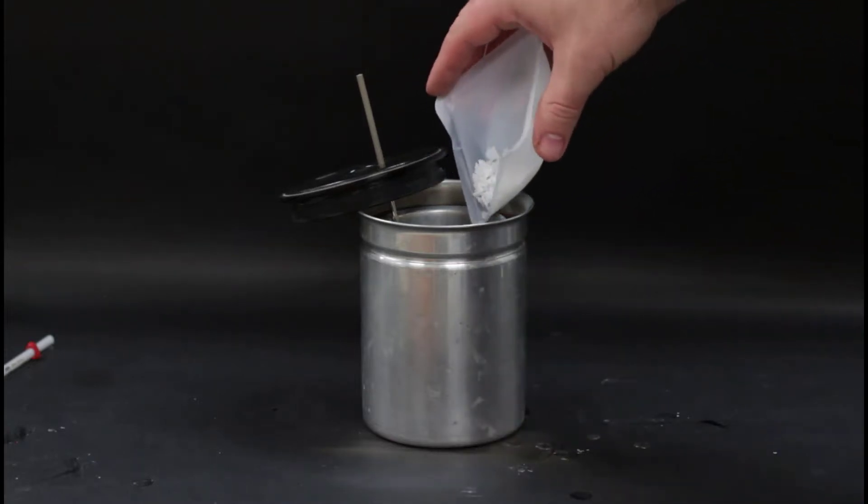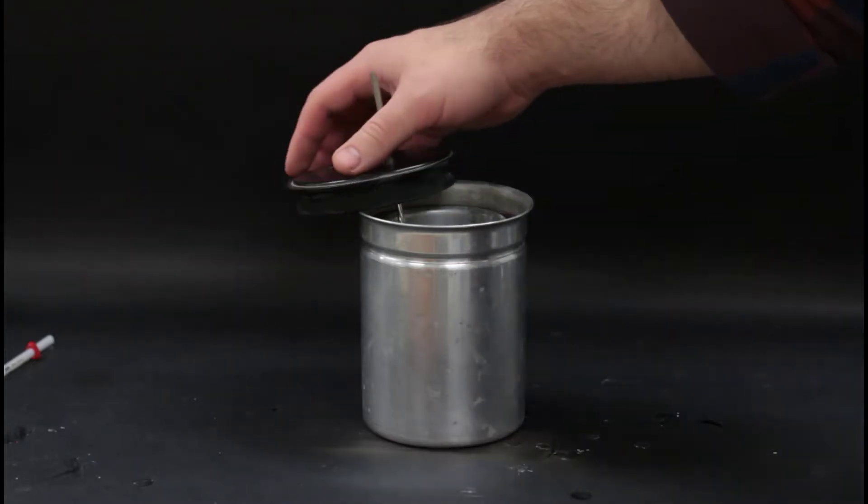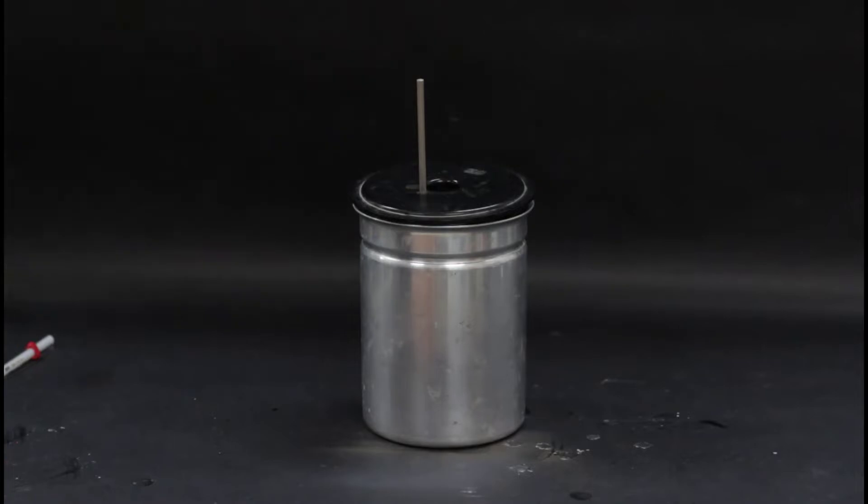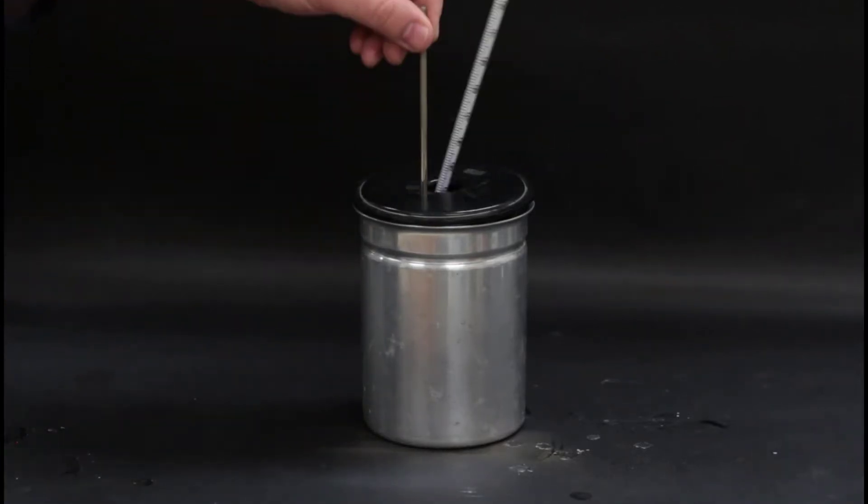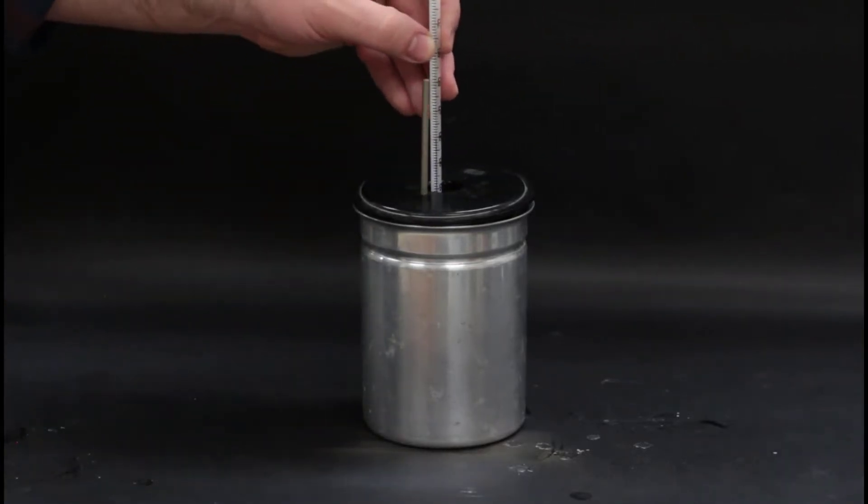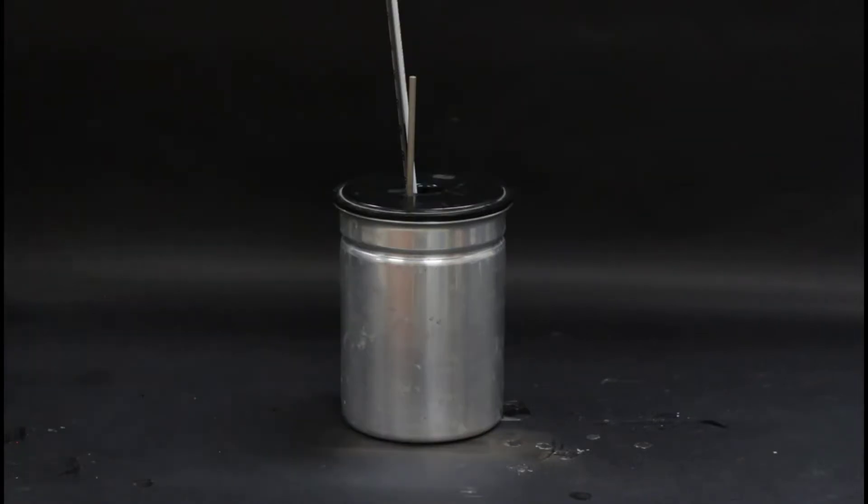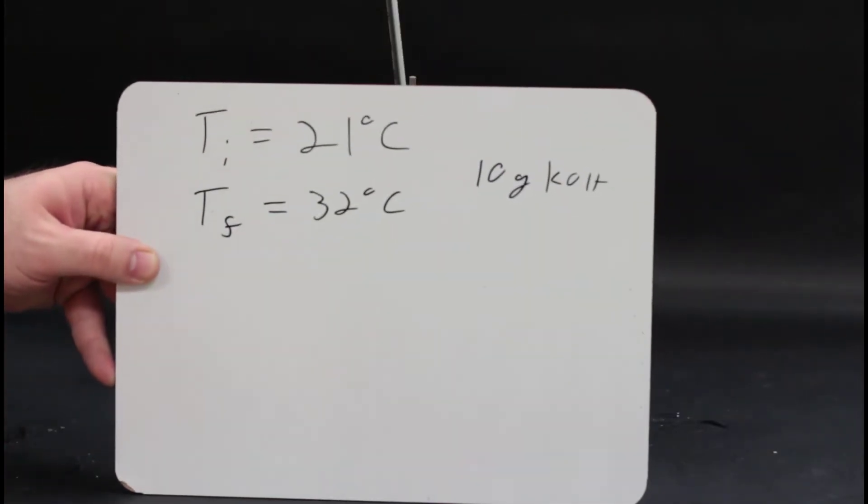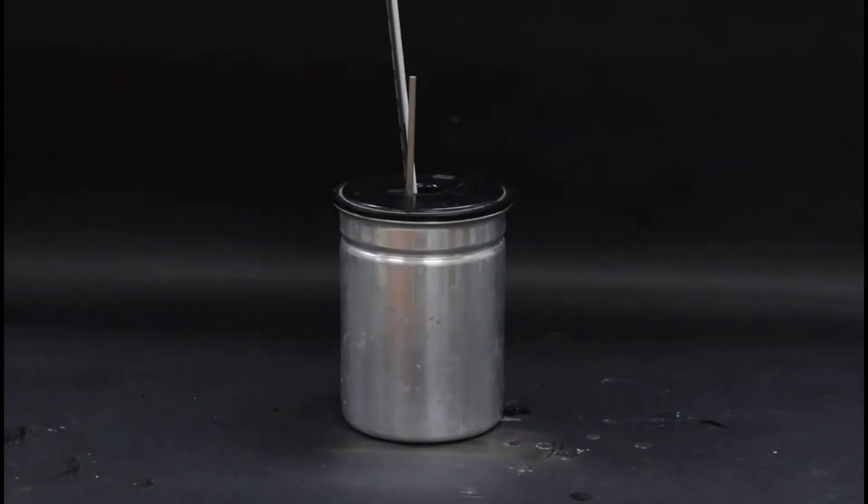Weigh 10 grams of your salt and pour it into the calorimeter. Use the stirrer to fully dissolve the salt and keep an eye on the temperature. Record the maximum temperature that the solution reaches. We'll use that change in temperature in our calculations. Then, dispose of the solution.